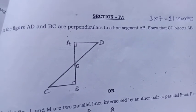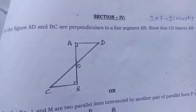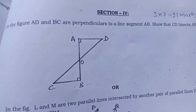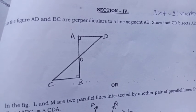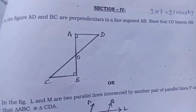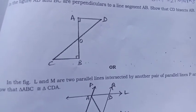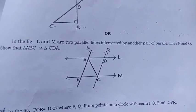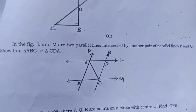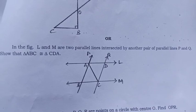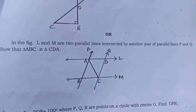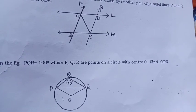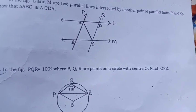Section 4. Here, each question carries 3 marks, total 7 questions. In the figure, AD and BC are perpendicular to a line segment AB and show that CD bisects AB. Or in the figure, L and M are two parallel lines intersected by another pair of parallel lines P and Q. Show that ABC is equal and parallel to CDA. In the figure, PQ is equal to 100 where PQ are points on a circle with center O, find OPR.